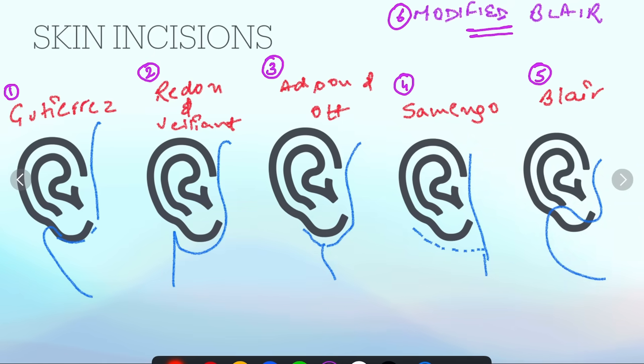Guttirez incision starts from the temporal extension. It is having temporal extension, the pre-auricular component, and the limb extending up to the neck. This one is Guttirez.